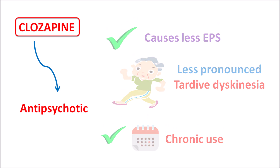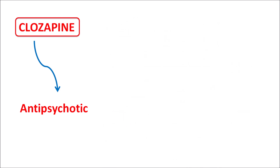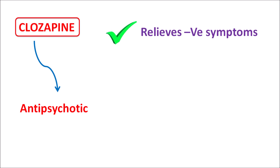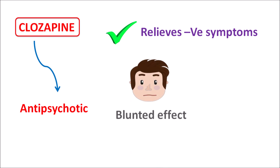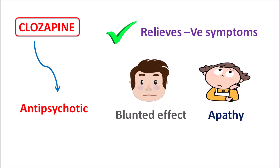Another important advantage of clozapine is that this drug can relieve both positive as well as negative symptoms. Negative symptoms such as lack of emotions, blunted affect, social withdrawal, apathy, and lack of initiation can be improved with clozapine, because this drug reduces both positive and negative symptoms of psychosis.